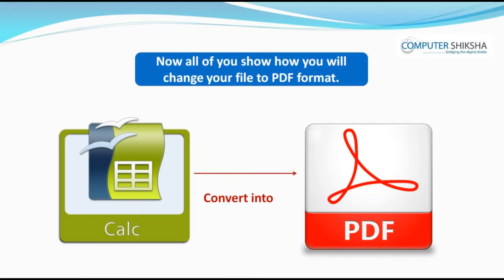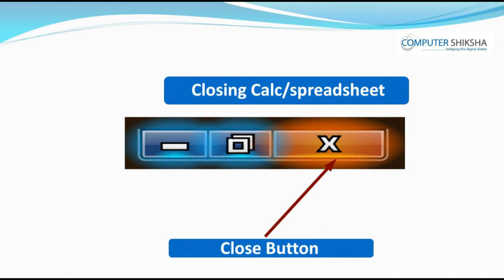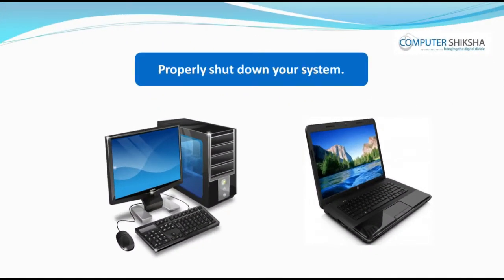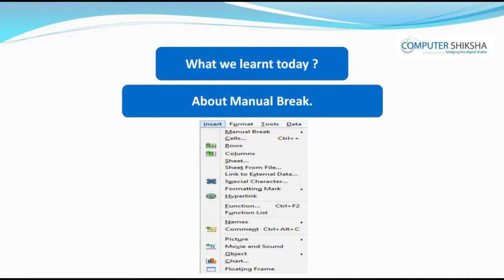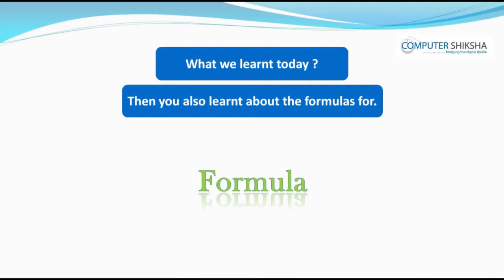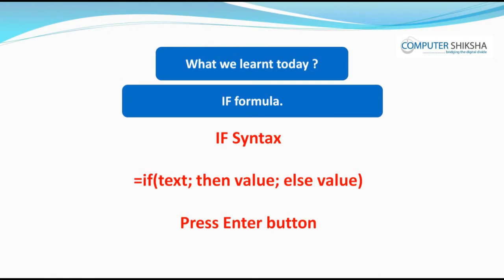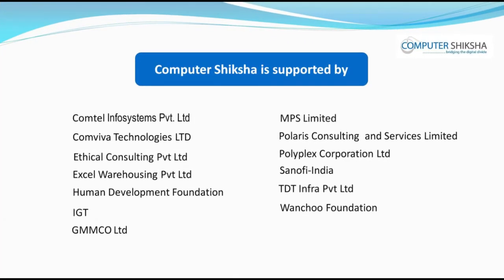Now all of you show how you will change your file to PDF format. Since we end today's class here, all of you save your file, then close the file, and also properly shut down your computer. What you learned in today's class was about manual breaks, cells, rows, column, sheet, sheet from file, hyperlink, function, function list, chart options, and the formulas for IF, AND, OR, COUNT, and COUNT BLANK.